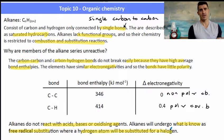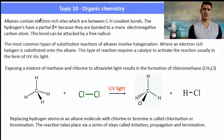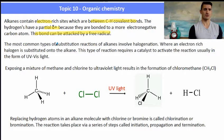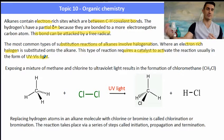The only thing alkanes undergo is free radical substitution, where a hydrogen is substituted for a halogen. Alkanes contain an electron-rich site between a carbon and hydrogen covalent bond. The hydrogen has a partial positive charge because carbon is slightly more electronegative, drawing electrons to itself, leaving that bond open for attack by a free radical. A substitution reaction involves substituting a hydrogen for a halogen — chlorine, bromine, fluorine, etc.